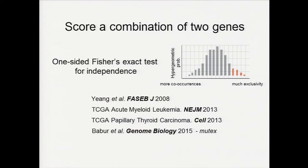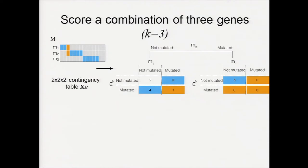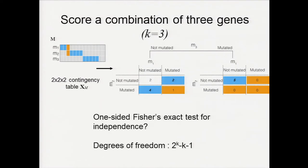We ask: what about a combination with three or more genes? We turn this mutation matrix into a higher-dimensional 2×2^K contingency table XM. Can we still run the one-sided Fisher's Exact test the same way? The answer is no, because the degree of freedom is just too large — there are too many ways in which the corresponding random variable can be non-independent.